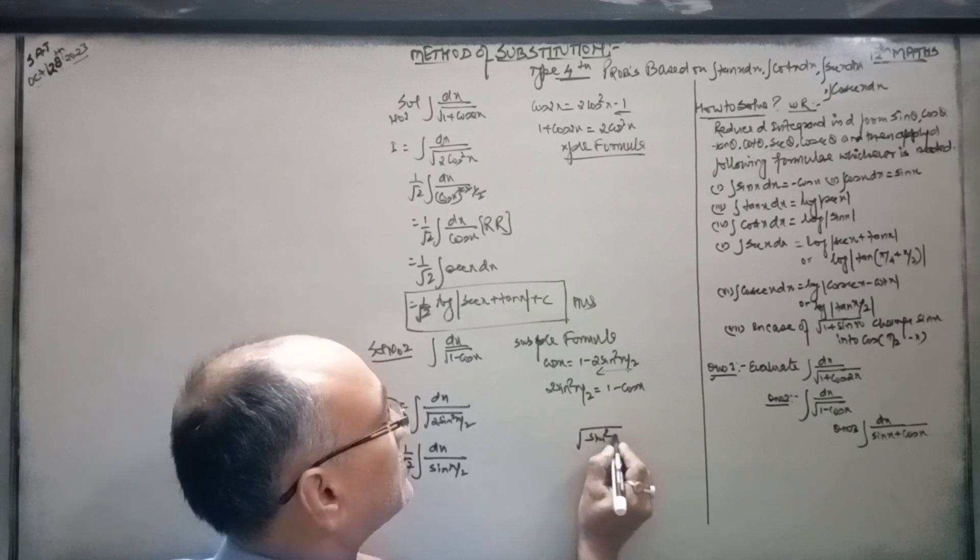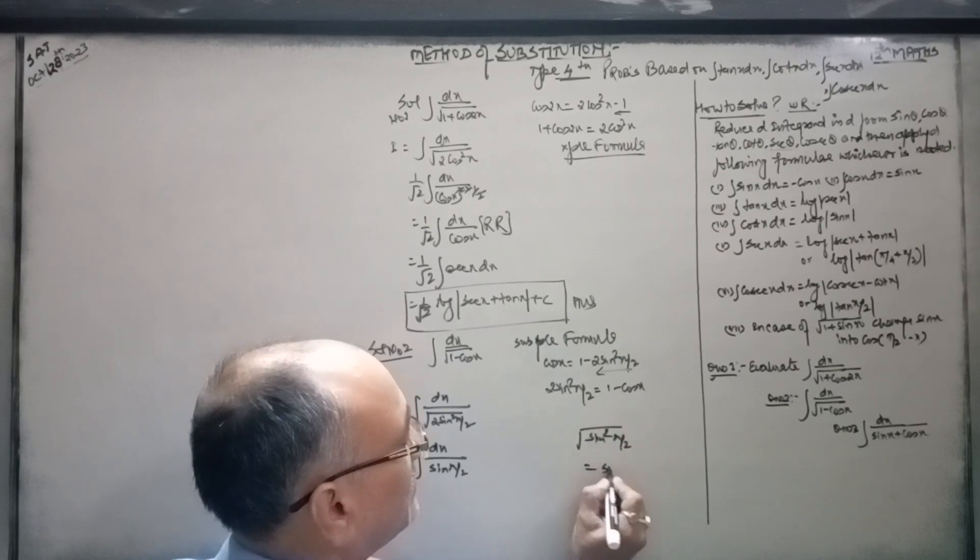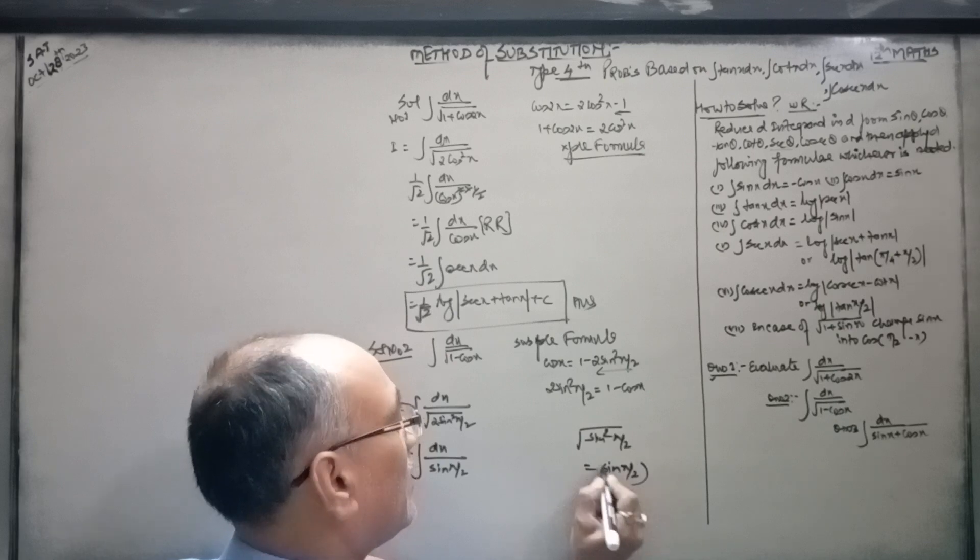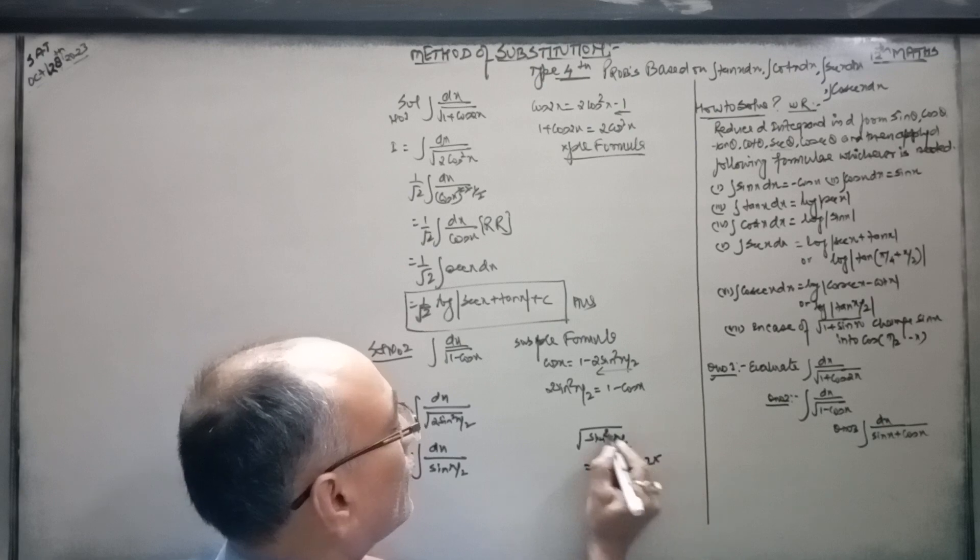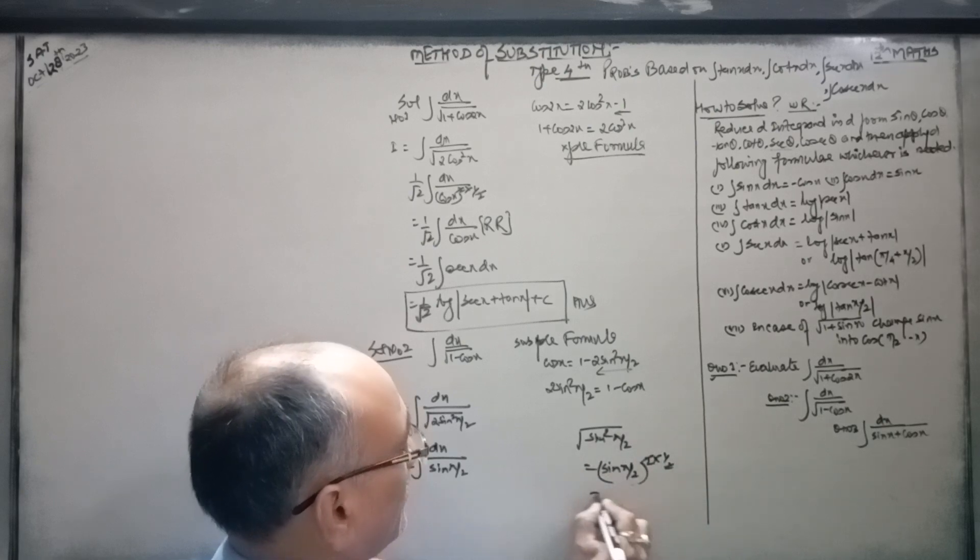Sin square x by 2 equal to sin x by 2. But under root, one by two remains. That's why we get sin x by 2.